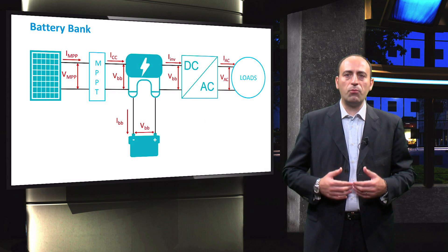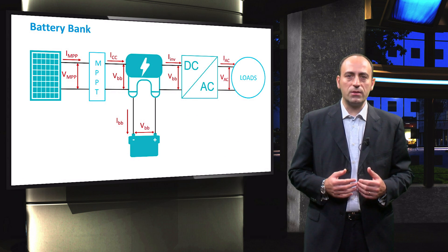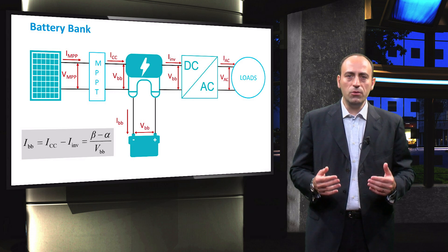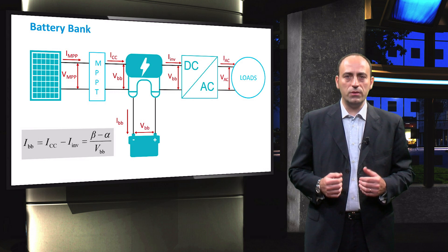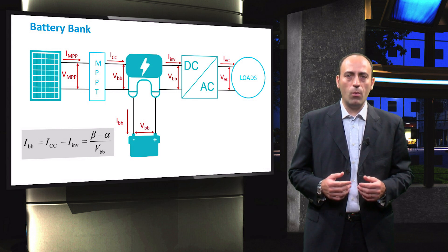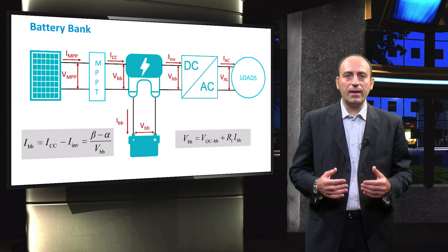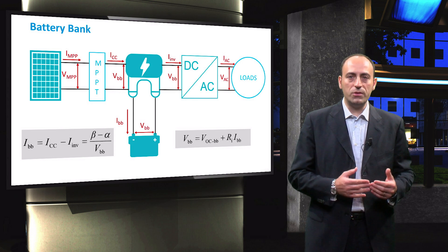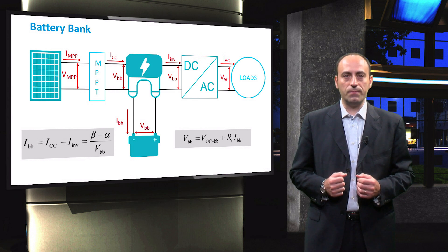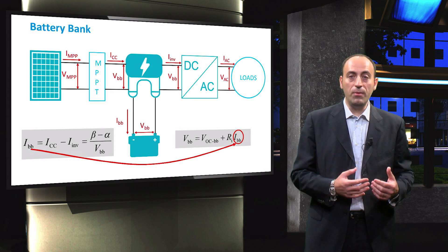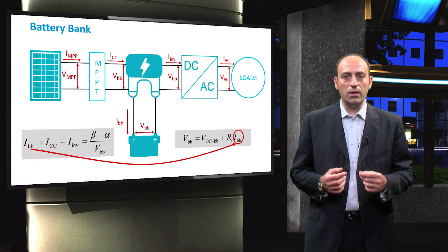Finally, from the expressions for the charge controller and inverter currents, the current flowing through the battery bank, IBB, is obtained. It is expressed as ICC minus IIM. Substituting their corresponding variables in this equation, IBB is obtained as beta minus alpha divided by VBB, where VBB is the voltage of the battery bank. As already mentioned, VBB can be written as a function of the battery bank open-circuit voltage, series resistance, and its current. Thus, by substituting the obtained expression for IBB in this equation, a quadratic equation in VBB is obtained.